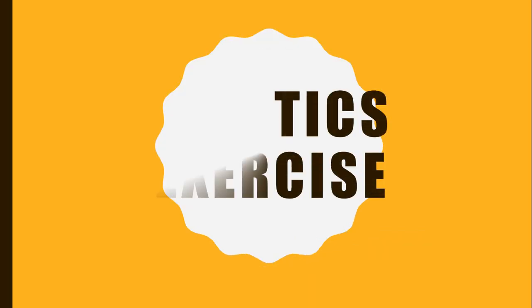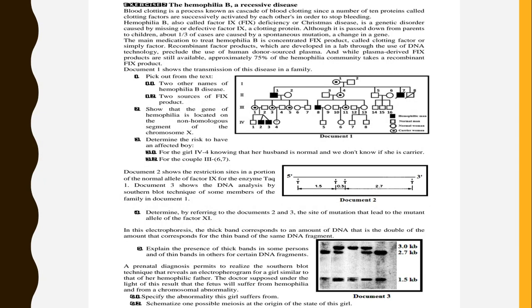Let's work through an important genetics exercise dealing with hemophilia B, which is a recessive disease. Our pedigree shows normal males and normal females as unshaded individuals. The shaded individuals are only males — these are the hemophilic individuals. We can also notice the presence of some carrier females, and the ones that are crossed are the ones that passed away.